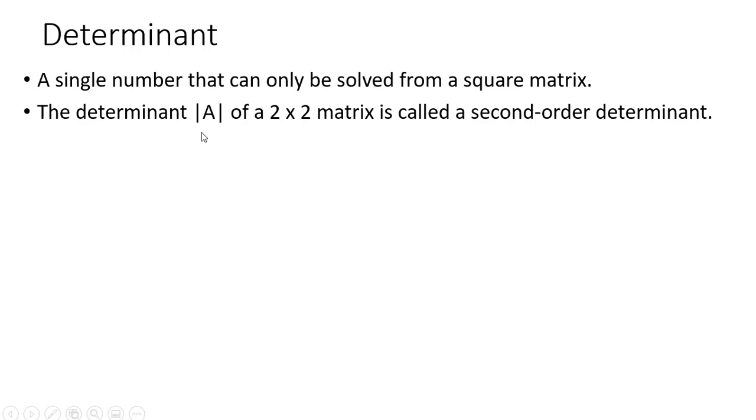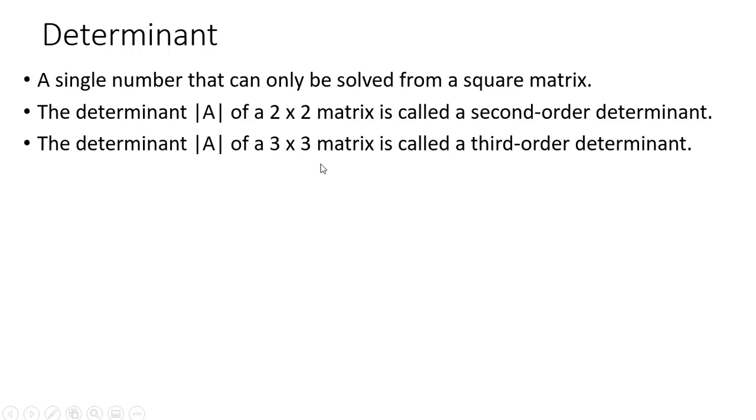The determinant, denoted by a double bar, not to be confused with absolute value, of a 2x2 matrix is called a second order determinant. A 3x3 matrix is called a third order determinant.